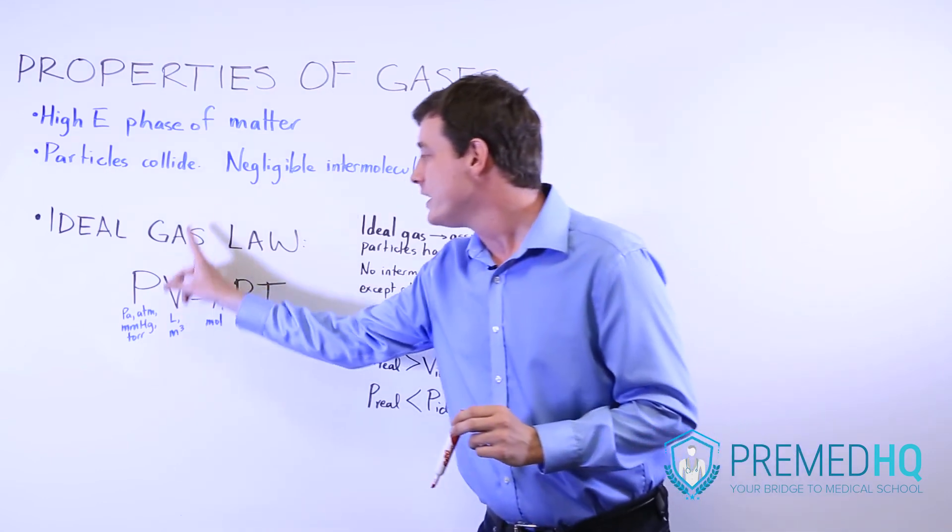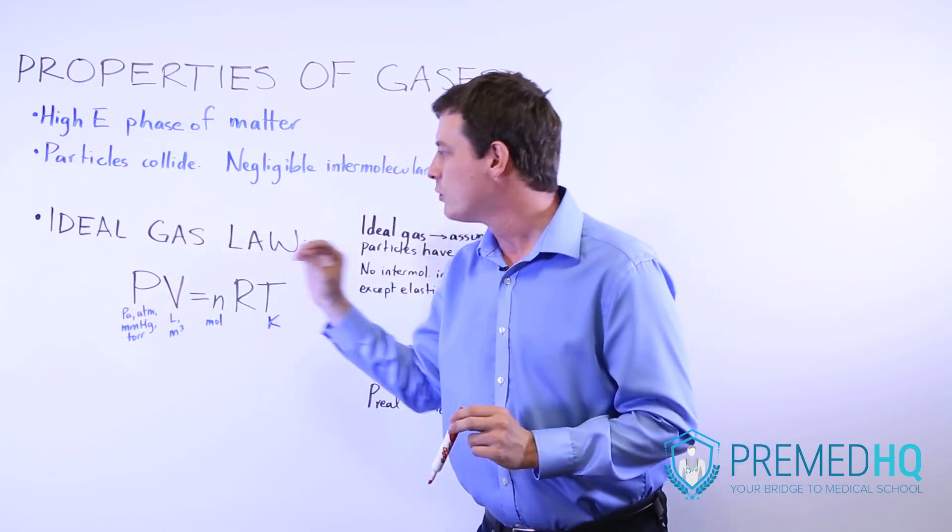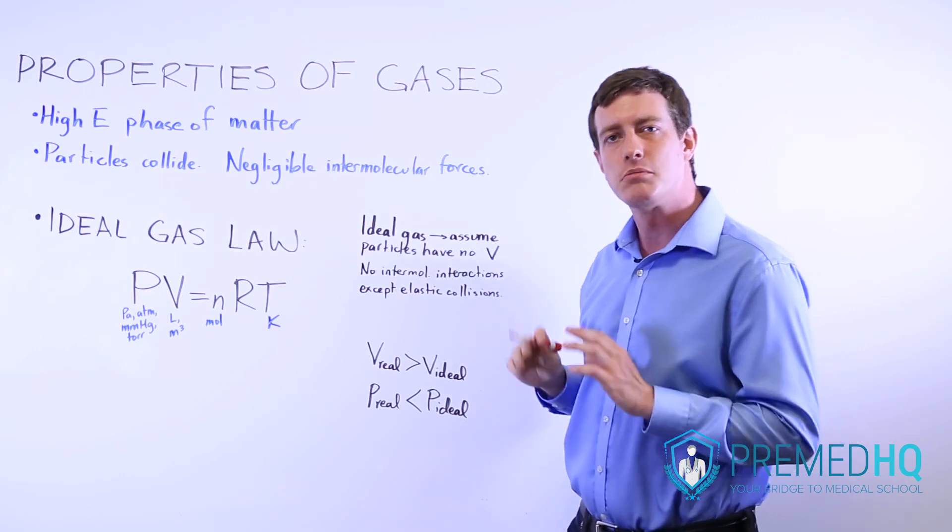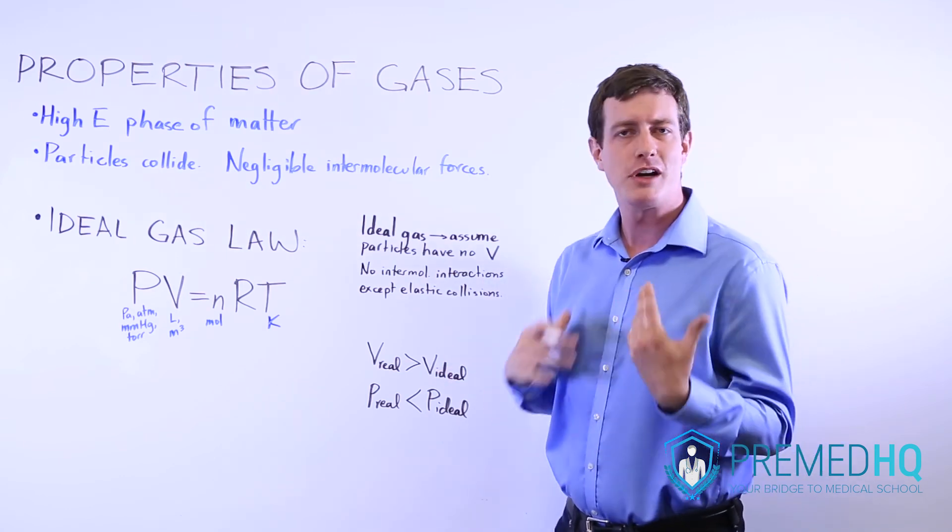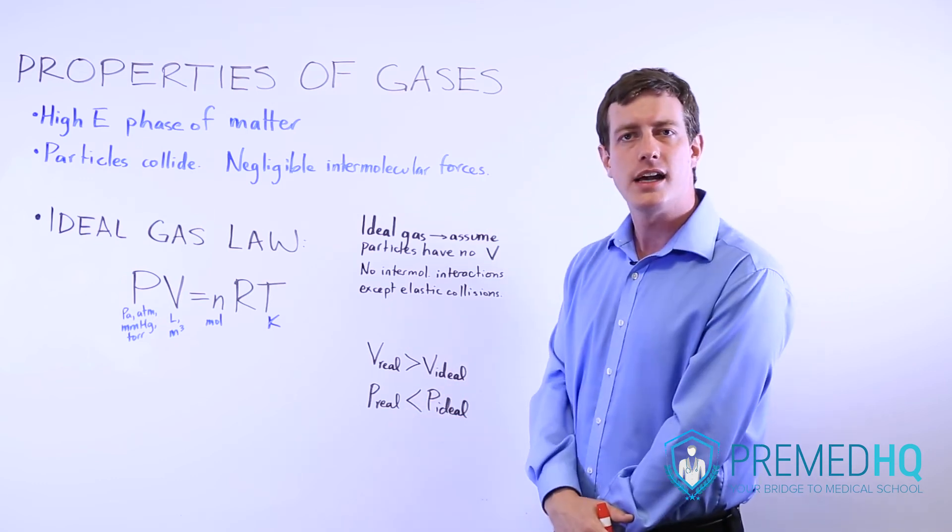And because this V is going up, but this equation still holds, if V goes up, pressure will likely go down just a little bit. So the pressure of a real gas, whenever you're asked about that, will likely be a little bit less than the pressure that you calculate with an ideal gas.